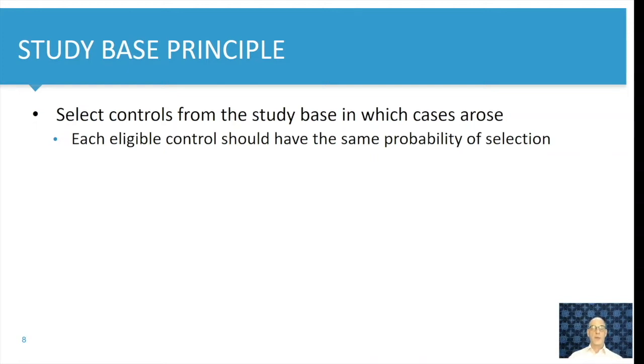So for example, if you have a study that had cases only from one region in a country, selecting a control from another region does not make sense because if that control in the other region would become a case, he or she would never be a case in the region from where the cases were selected. So in that sense, the study base principle would be violated.